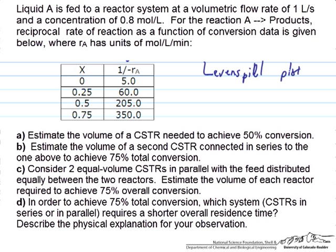What we want to do is estimate the volume of a CSTR needed to achieve 50% conversion in part A where the reaction is A goes to products. We're given information about the volumetric flow rate and the inlet concentration. We just need to solve for how to get up to 50% conversion in a CSTR.